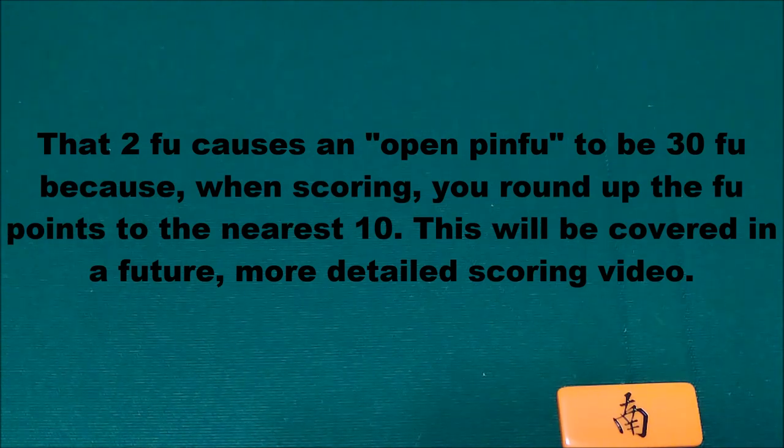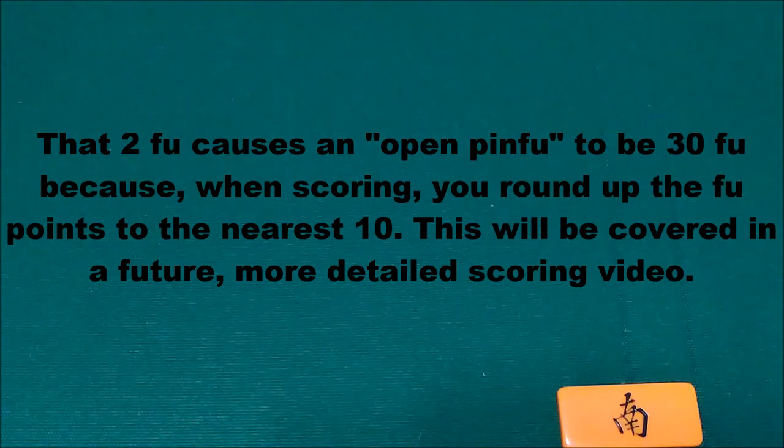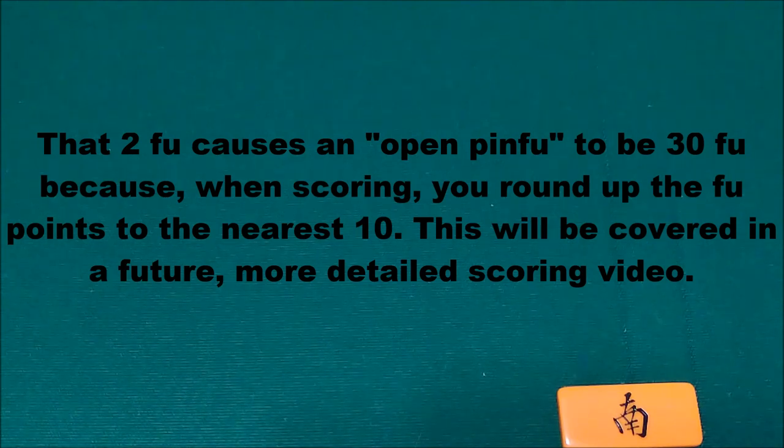The last thing I want to cover is if your hand is open, meaning that you've called on someone else's tiles, but it's not worth any Fu because you didn't Tsumo with it. You got a Ron on someone and it was all sequences, there's no triplets or Kans to add Fu and you didn't have a pair of a dragon or a specific wind tile to add Fu. That hand gets 2 Fu for being what's called open Pinfu. Just know that any open hand is at least 30 Fu. The only hand that can be below 30 Fu are hands that qualify for a specific Yaku that require the hand to be closed.